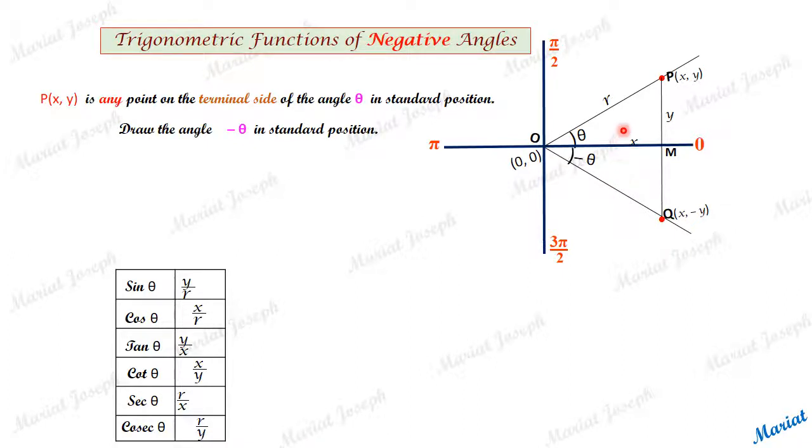Now simple geometry can prove that triangle OMP and OMQ are congruent. Angle theta measure, geometrically they are equal angles. OM is common side. This is drawn perpendicular, 90 degrees and 90 degrees. So by ASA congruency these two triangles are congruent.